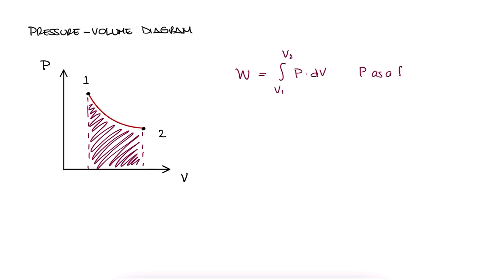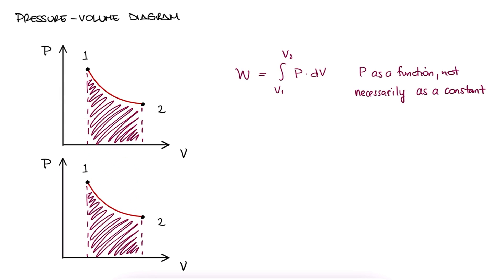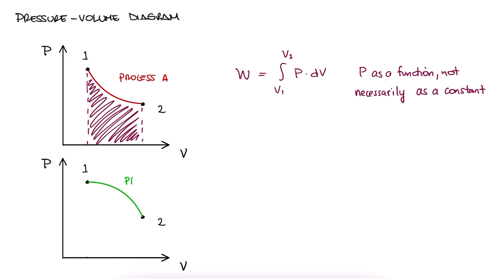If we have a pressure volume diagram for any given process, where we have states 1 and 2, we see from our integral definition that the area under this curve is the amount of work needed to go from 1 to 2. And the point here is that if the shape of that path was different, meaning a different process, the area under the curve would be different, meaning the amount of work would be different as well.